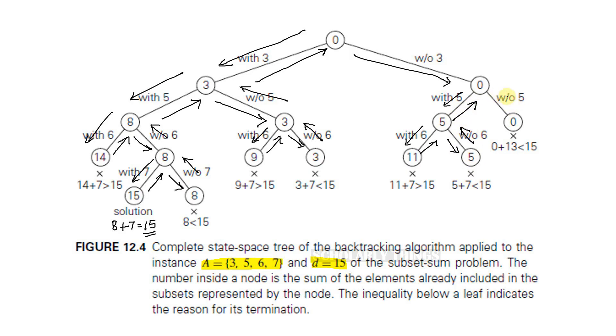The other option here is to check without 5. Without 5, the sum is 0. Even if I include 6 and 7, the sum will be less than 15. So this path is also ignored.